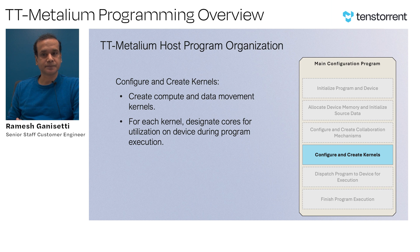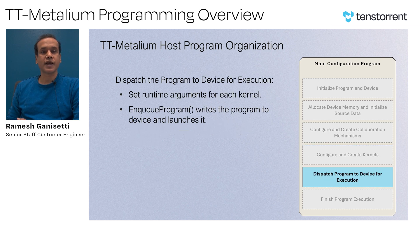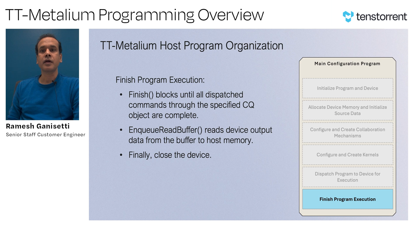The next step is to configure and create kernels. The kernels are of two different types: the compute kernel and the data movement kernels. The host program has to specify these kernels that need to be executed on the device, and also specify the cores on which these kernels are going to execute. Next is to dispatch the program to the device for execution, meaning the host program is responsible for setting the runtime arguments for these kernels and then using the EnqueueProgram API to run the program on the device. The final step is to finish the program execution. The finish API is used to block any further commands to the device and make sure all commands issued from the command queue are complete — so the finish API acts like a barrier. Then there is the EnqueueReadBuffer API to retrieve data back from the device, and then it closes the device.